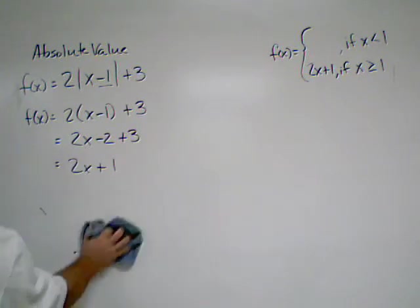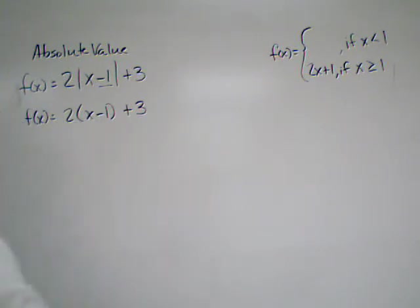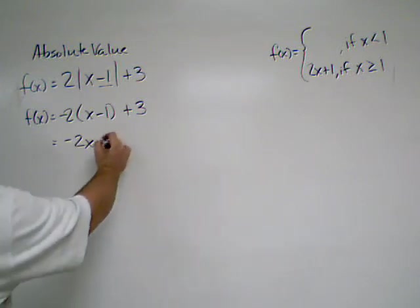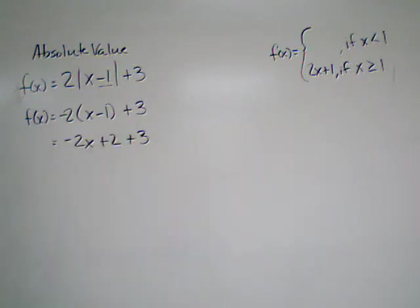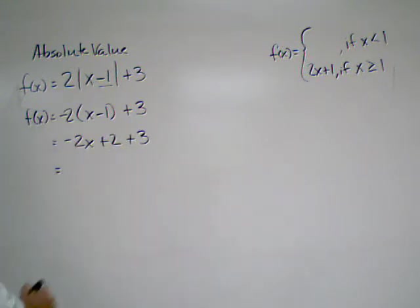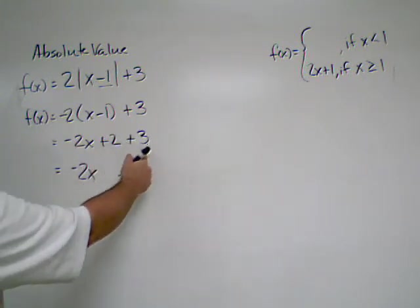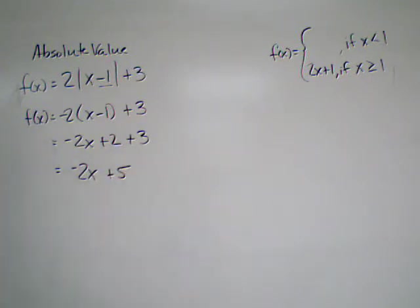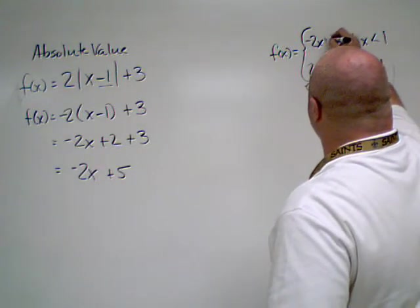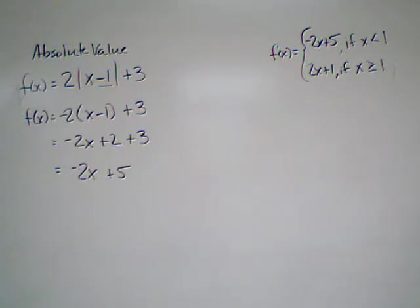Now all we have to do is fill in that last expression. To do that, we're going to start with the same function again, except we're going to make the slope negative. So we're going to evaluate the same way. We're going to get negative 2x plus 2 plus 3, because I distributed the negative 2 into both terms, and a negative times a negative gives us a positive. So we're going to combine like terms again. Positive 2 and positive 3 gives us a positive 5, and there is our second expression. And it fits in right there.